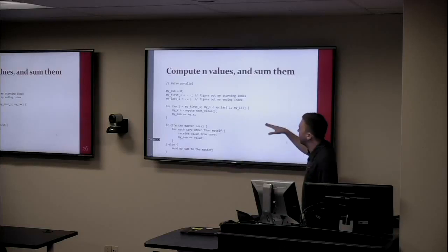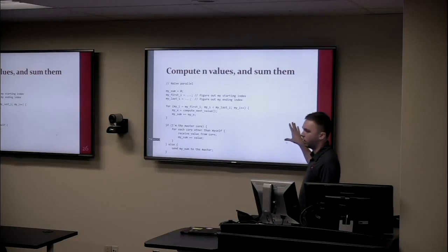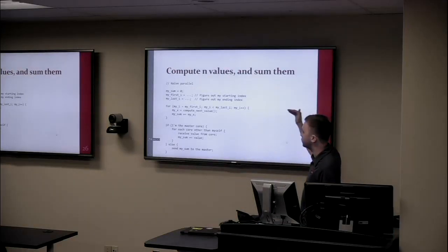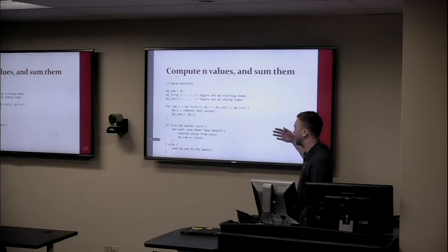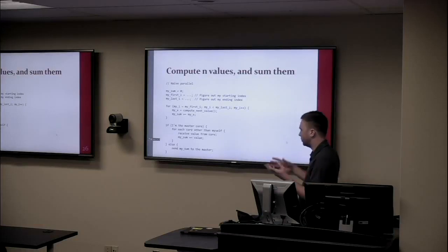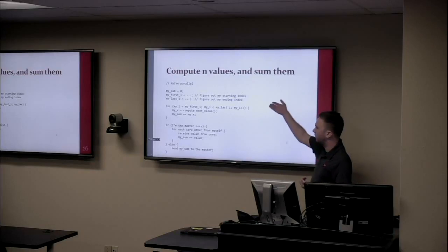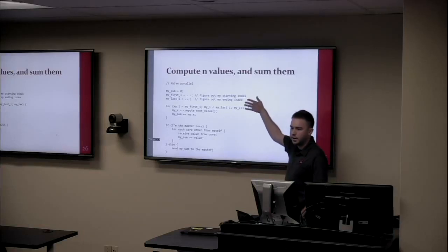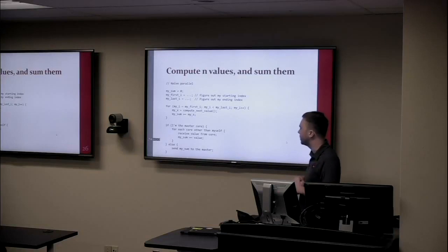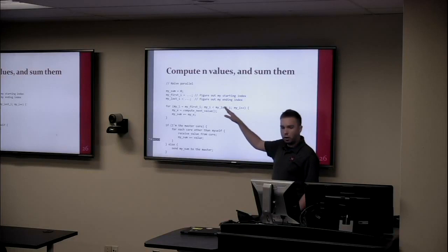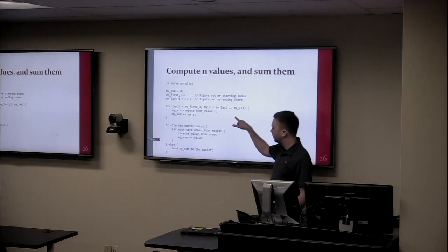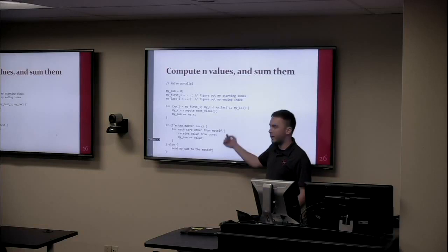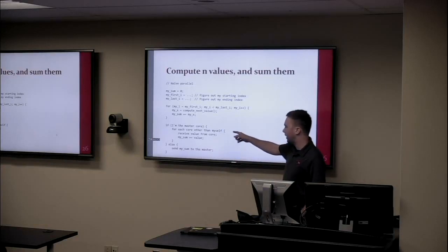Here's a simple way to do it using Single Program Multiple Data parallelism — we run lots of copies of the exact same code and assign each copy an ID. The one with ID zero is the master; the others are workers. Each core sets my_sum to zero, then figures out its starting and ending index based on its ID, runs the loop just for its chunk, and computes its partial sum.